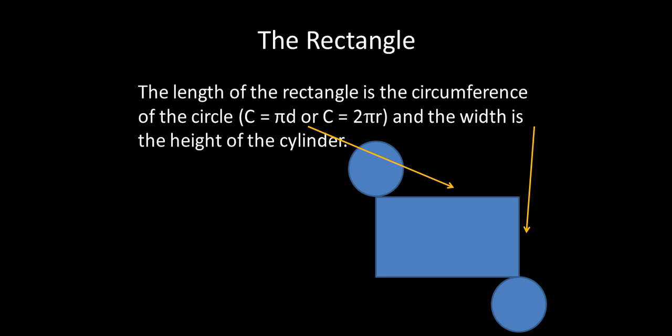So that's sometimes complicated because we also have the circumference equation in there, because the length of the rectangle is actually the circumference of the circle. Finding the surface area of a cylinder is pretty complicated because it has all of those parts: the area of the circle equation, the circumference equation, and the area of a rectangle equation.